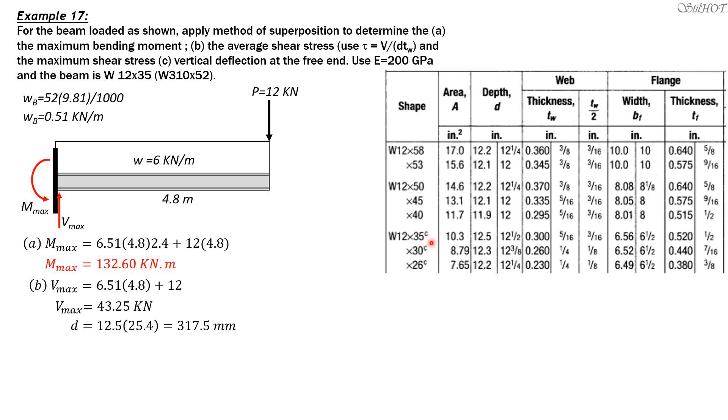For the thickness of the web, we have 0.3 inches times 25.4, which equals 7.62 millimeters. Substitute into the formula tau average equals maximum shear 43,250 newtons over 317.5 millimeters times 7.62 millimeters. The unit is newtons per millimeter squared or megapascals. So the average shear stress is 17.88 megapascals.